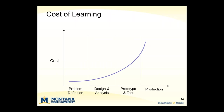Most would agree that the cost of looking at a new alternative increases as you go through the project. Early in the project when you're dealing with sketches on the back of a napkin or on a whiteboard, the marginal cost for a new idea is very small. Then as we get into developing CAD models and 3D solid models, making a change is a little more expensive. And certainly as we get into prototyping — particularly high-fidelity prototypes for lifecycle testing — those can get quite expensive.